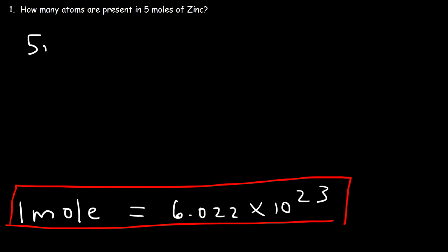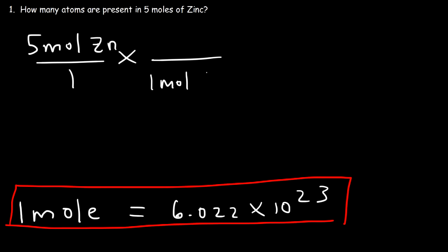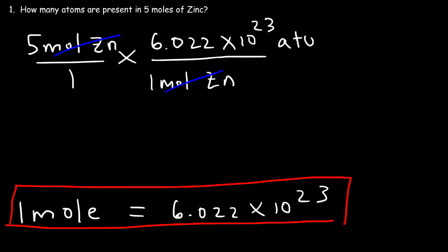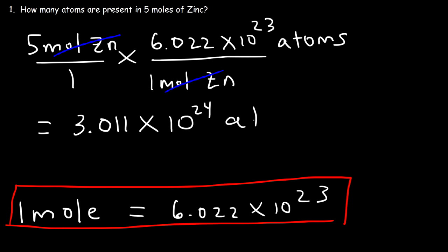So if we have five moles of zinc we can convert it. Put one mole of zinc on the bottom so the units cancel, and in the numerator put Avogadro's number. So to get the answer it's 5 times 6.022 times 10 to the 23, which gives 3.011 times 10 to the 24 atoms of zinc.